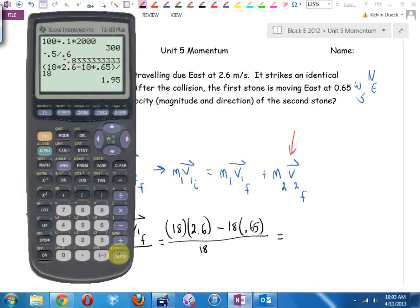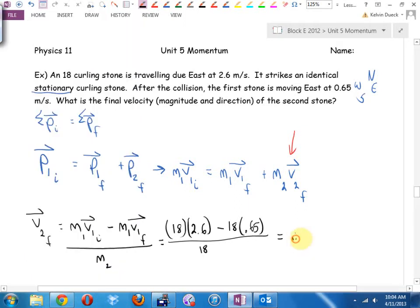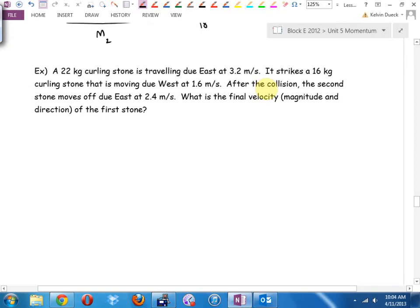1.95. That was to two decimal places. I actually factored out the 18s, canceled out the 18s, and realized it's really just 2.6 minus 0.65, which I can do in my head. That's the magnitude, but it said it wants the final velocity. What did I write in brackets? Magnitude and direction. Which direction? East.